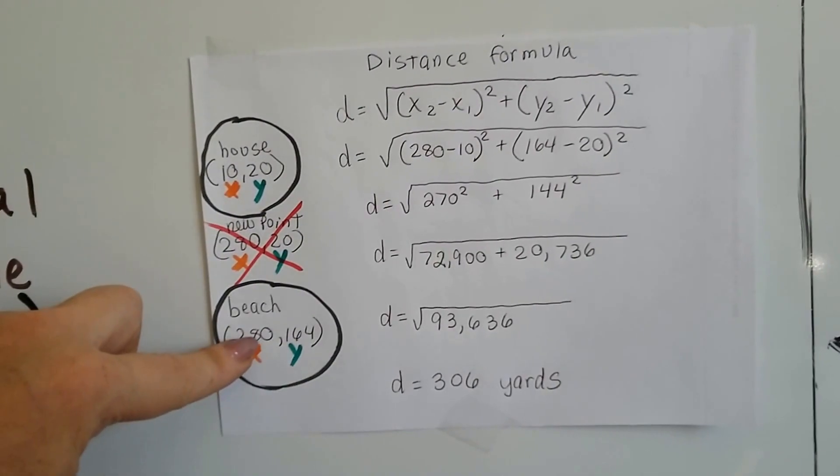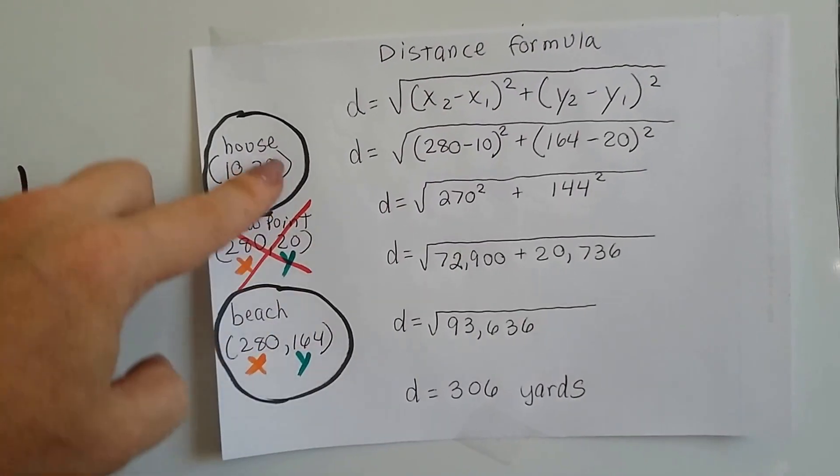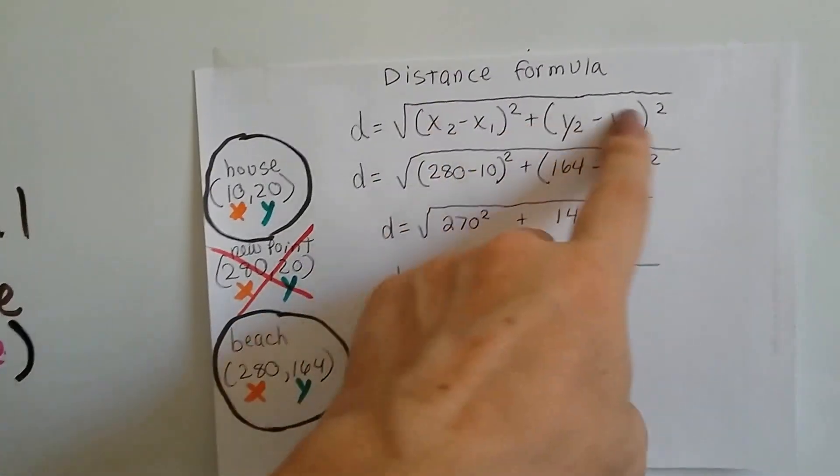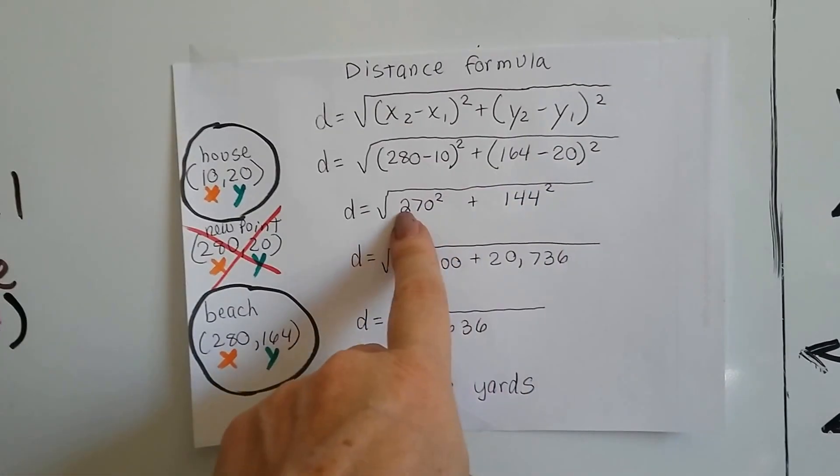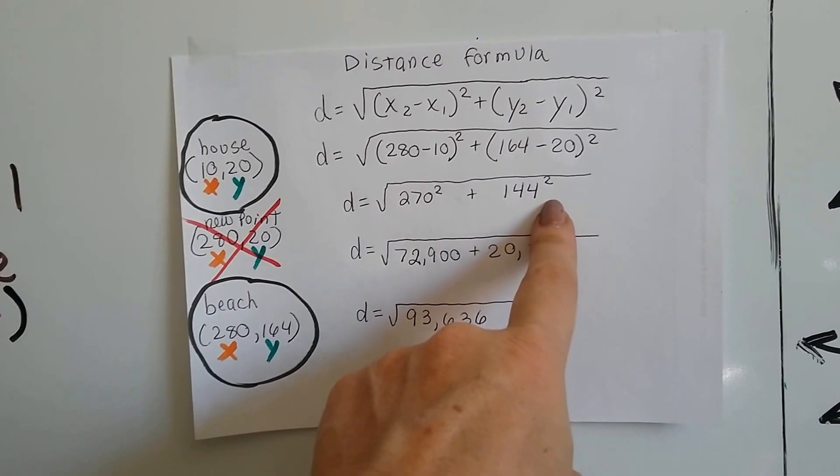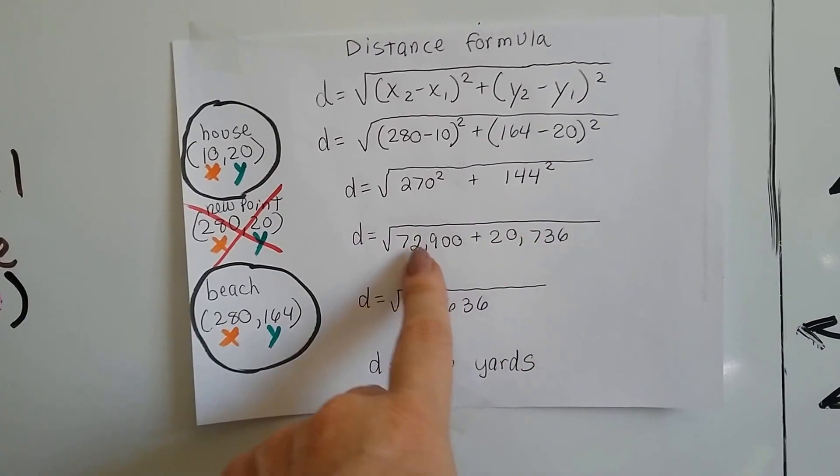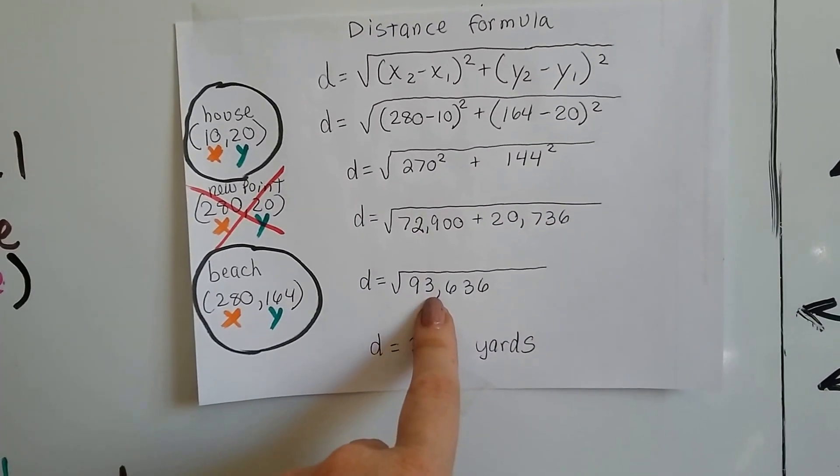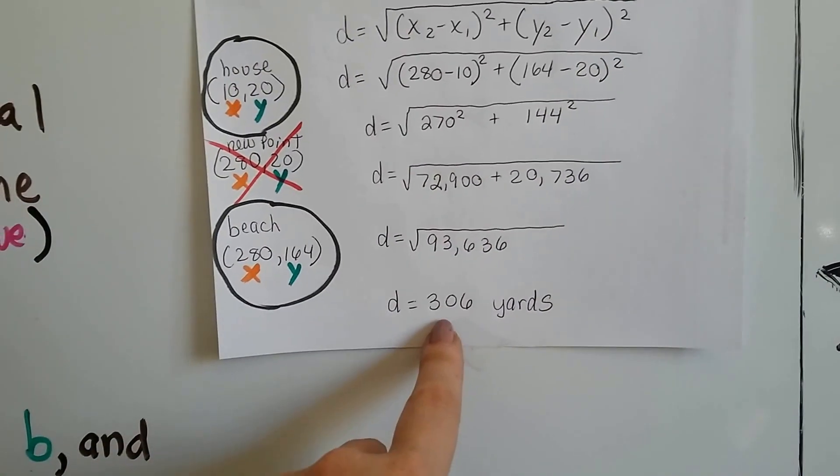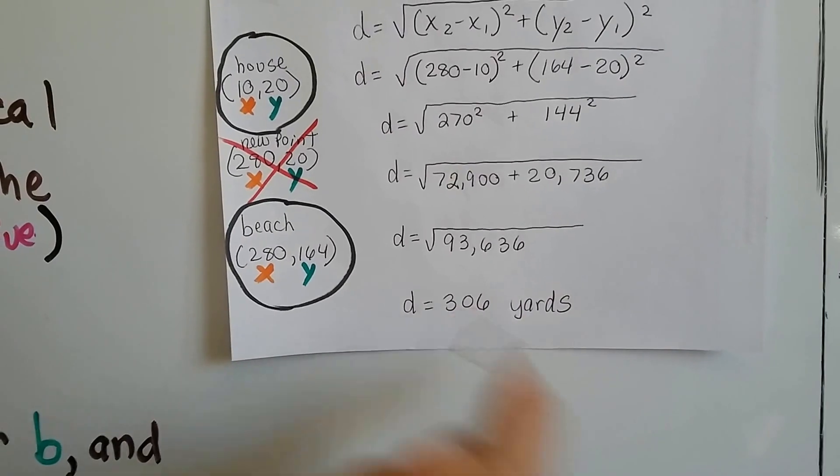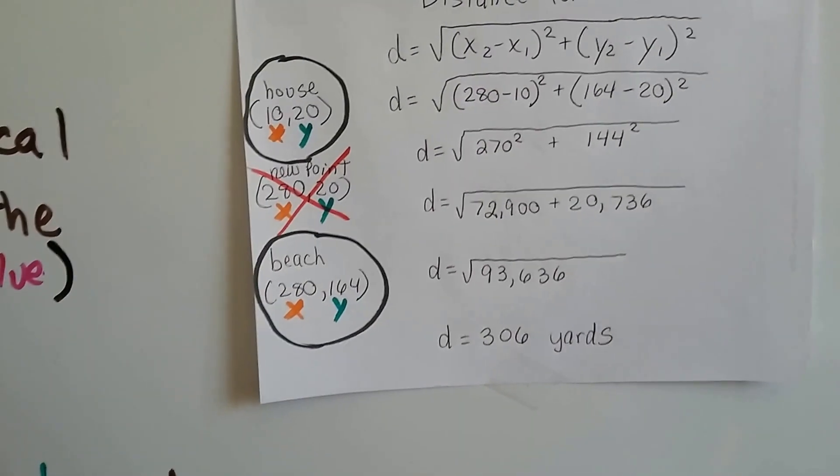And we used x2 minus x1 and y2 minus y1 right here as the distance formula. And we did our math. We got our 270 squared and our 144 squared. And we did the multiplication for those and got 93,636. And we figured out what times what equals that. And the distance is 306 yards. Distance formula.